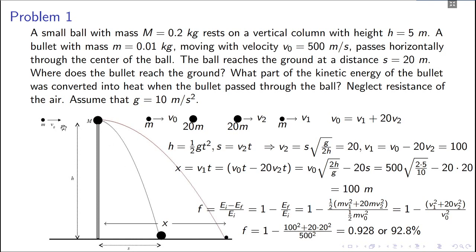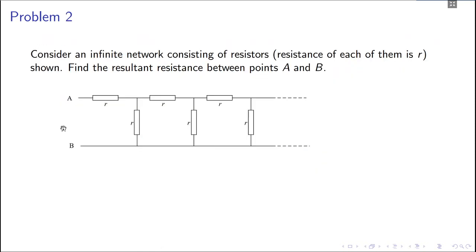This was problem 1. This is problem 2, it's very easy. This kind of problem is very routine knowledge in school. There is an infinite network of resistors, each of them is r, and you have to find the net resistance between these two points.